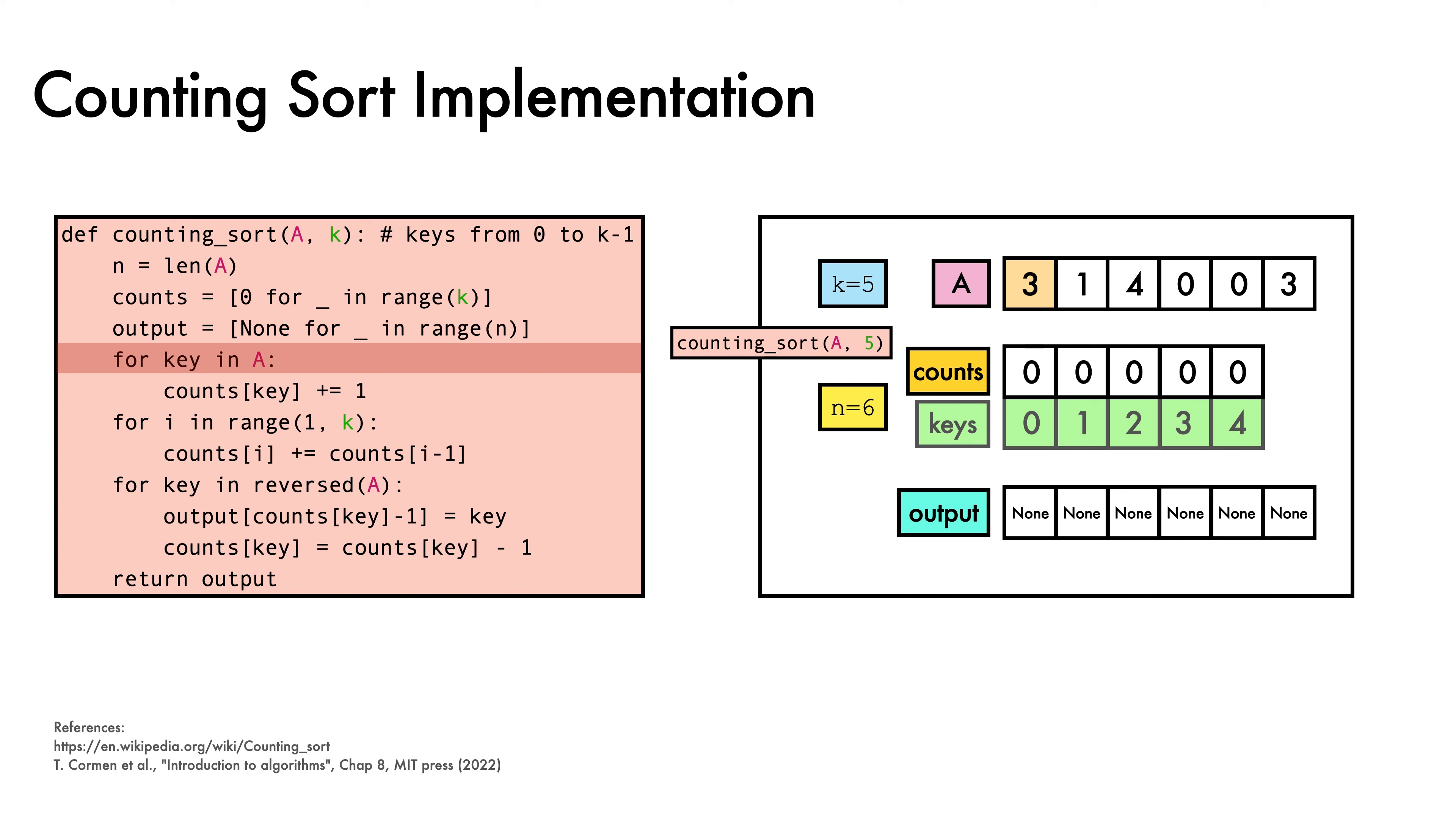We now do our first for loop, examining the first key, which here is 3, and incrementing the counter for 3 in the counts array. Then we move to the second key, which is 1, and similarly increment its count. We repeat this process for each key in the array until we reach the end and each count value has been updated.